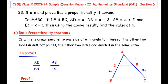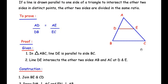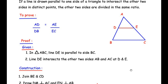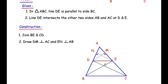To prove this, let us first write down the given things. In triangle ABC, line DE is parallel to side BC, and line DE intersects the other two sides AB and AC at two distinct points D and E. Next we are going to make a construction: join BE and join CD.